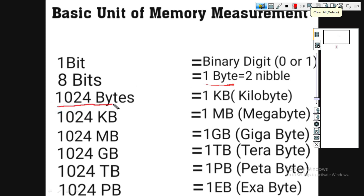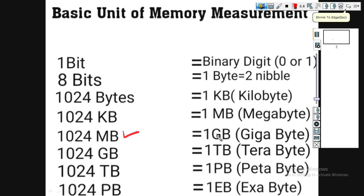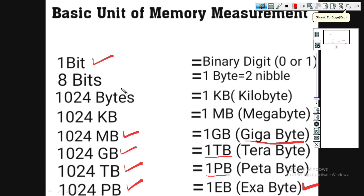So 1024 bytes is equal to 1 KB. Next, 1024 KB is equal to 1 MB. Next, 1024 MB is equal to 1 GB. And 1024 GB is equal to 1 TB. So now we have a hard disk on a desktop or laptop and you can use 1 TB to 2 TB. 1024 TB is equal to 1 PB.